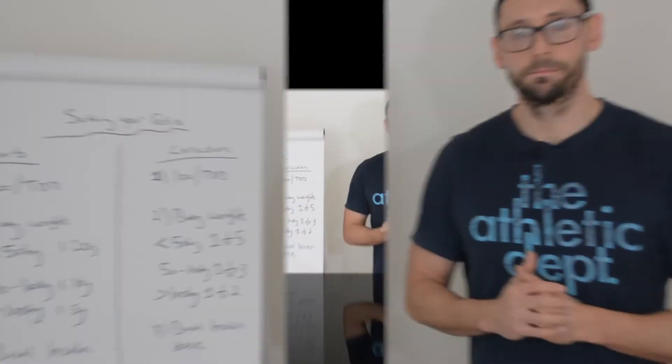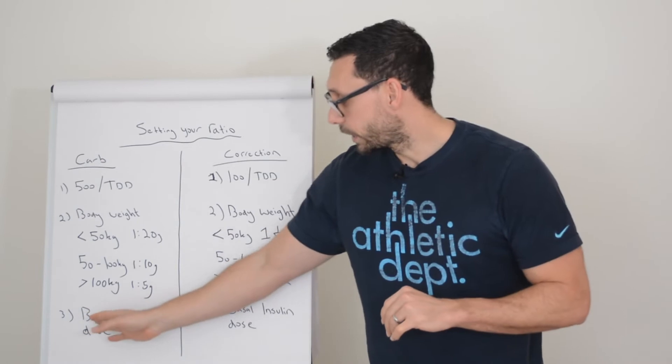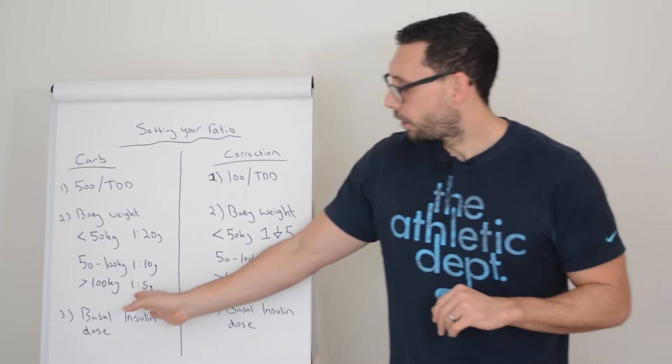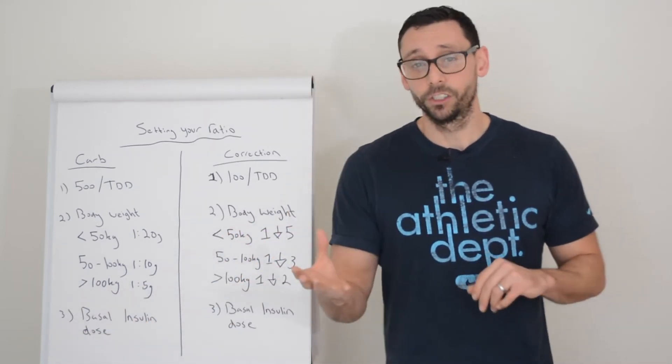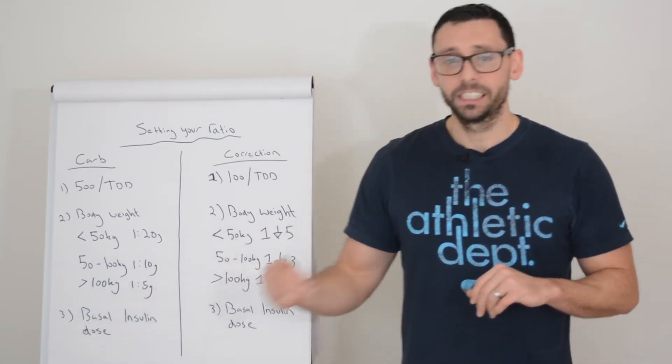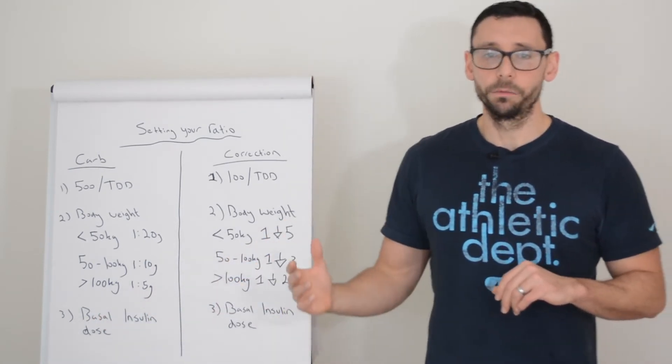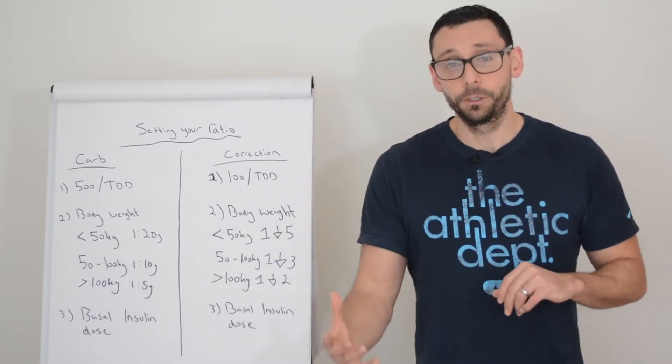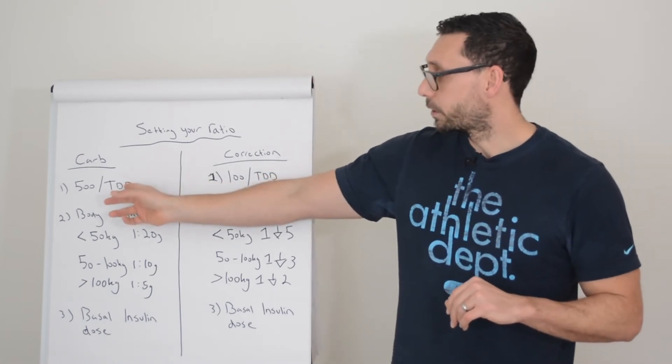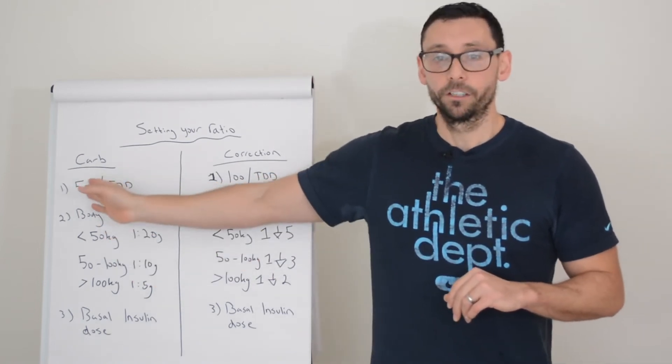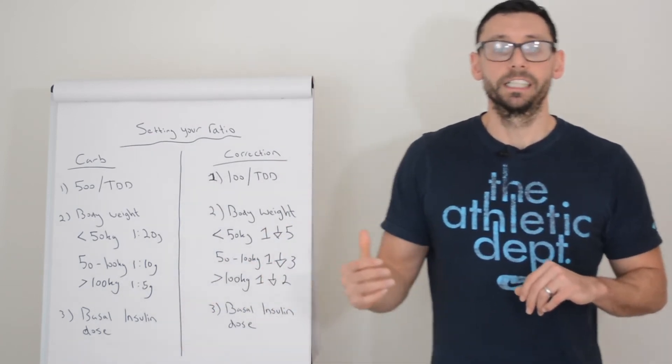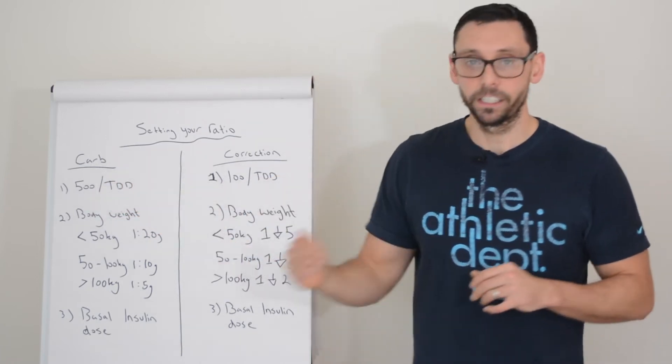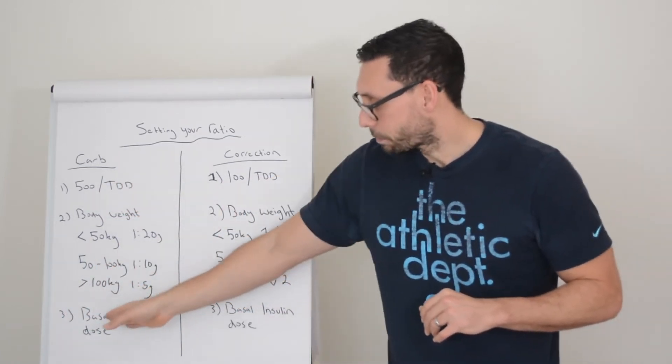And last but not least, what you can also use is your basal insulin dose. This ties into your total daily insulin dose in a way, but just from what I will do in practice, your background or your basal insulin can give you a lot of information about the type of ratio that you might be expecting to have. For example, if you have a background insulin of 50 units a day, and we're looking at this total daily dose example in example one, 500 divided by 50 already gives you a ratio of one unit to 10 grams.